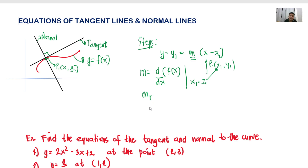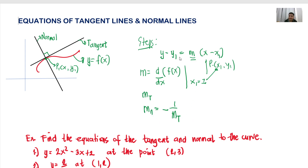Now, what about the slope of the normal line? Since the normal line is perpendicular to the tangent line, they do not have the same slope — their slopes are different. The slope of the normal line is equal to the negative reciprocal of the slope of the tangent line. So, the steps are: get the slope, then simplify the equation — and that will be our answer, the equation of the tangent and the normal to the curve.